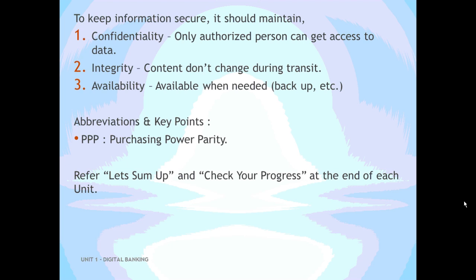Confidentiality means only authorized people will get access to the data. Integrity means whatever data has been transmitted in the process of a transaction should not be changed by any third party. Availability means the intended user should get the actual data sent by the center, and the data should be available whenever it is needed. A proper backup should be readily made available so that no interruption is caused in banking operations.